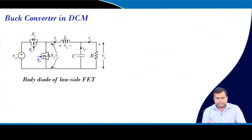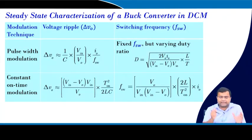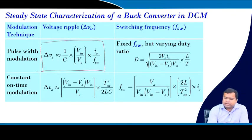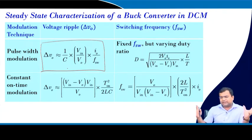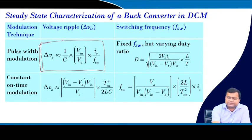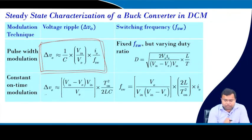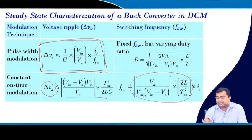For discontinuous conduction mode, we generally do not operate under PWM when load current decreases, because that increases switching loss. The ripple may slightly reduce as load current decreases, but if it stays within acceptable limits there is no problem. We only need to maintain the output voltage ripple within a specified limit.